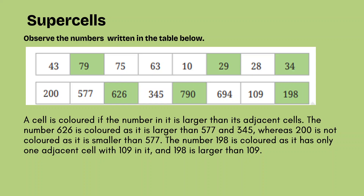Let us observe the numbers written in the table. Here we understand the concept of the supercell. A supercell is a cell where the number is greater than the side numbers. For example, if we compare 43 and 79: 79 is greater than 43, and at the same time 79 is greater than the next number, 75. Therefore, we call the number 79 a supercell.